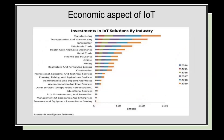Here is the economic aspect of IoT — investments in IoT solutions by industry. We can see how manufacturing is investing in IoT, and how rapidly those investments are increasing. Sectors include transportation and warehousing, information, wholesale trade, healthcare and social assistance, retail trade, financial and insurance, as well as structure and equipment expenditures.